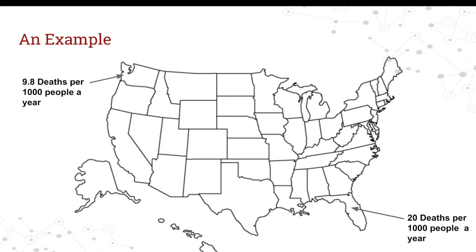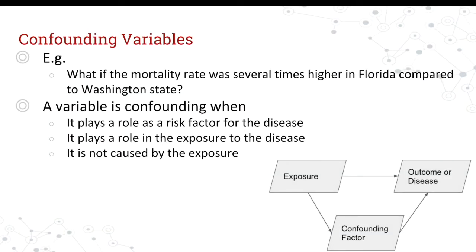So what is a confounding variable and how do we define it really? A confounding variable, besides this example, when you get to the core of it, is something that plays a role as a risk factor for disease. You see this graph in the corner — exposure, outcome — and then the confounding factor or variable at the top. Typically when we look at an outcome, we think exposure leads to some sort of outcome, but it's obviously not that straightforward. There are a lot of other things that play a role, and the more you can explain those things, the more accurately you can make conclusions.